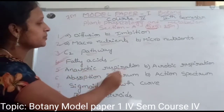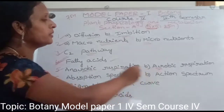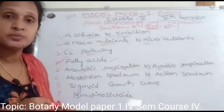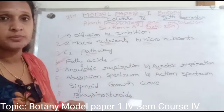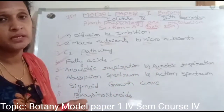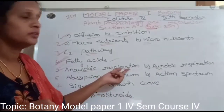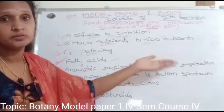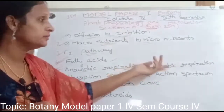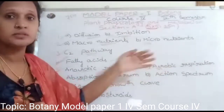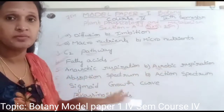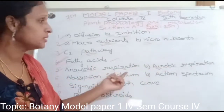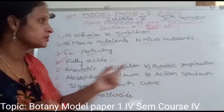Next question: Anaerobic respiration and aerobic respiration. These are two types. Aerobic means in the presence of oxygen; anaerobic means without oxygen. So respiration types are explained.